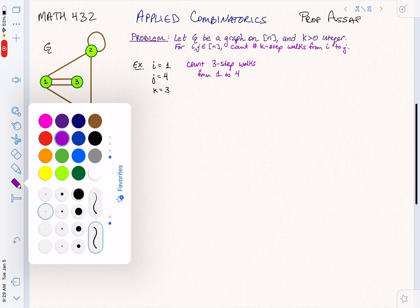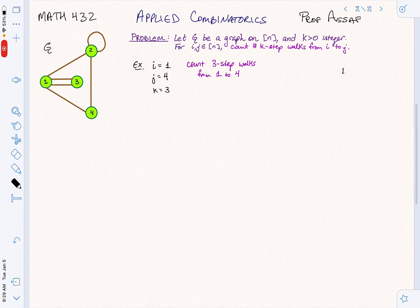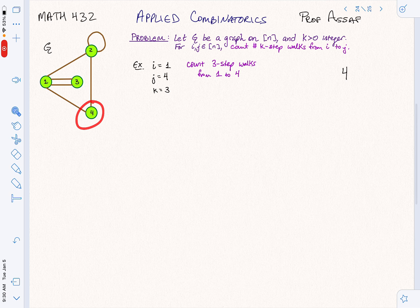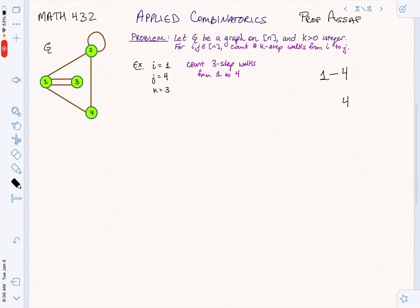Well, one thing that we could do is say, we know we're going to end up at the number 4. We know 4 is going to be the last thing that we hit. So what did we get to just before we got to 4? There are only two options. It was either 1 or 2.